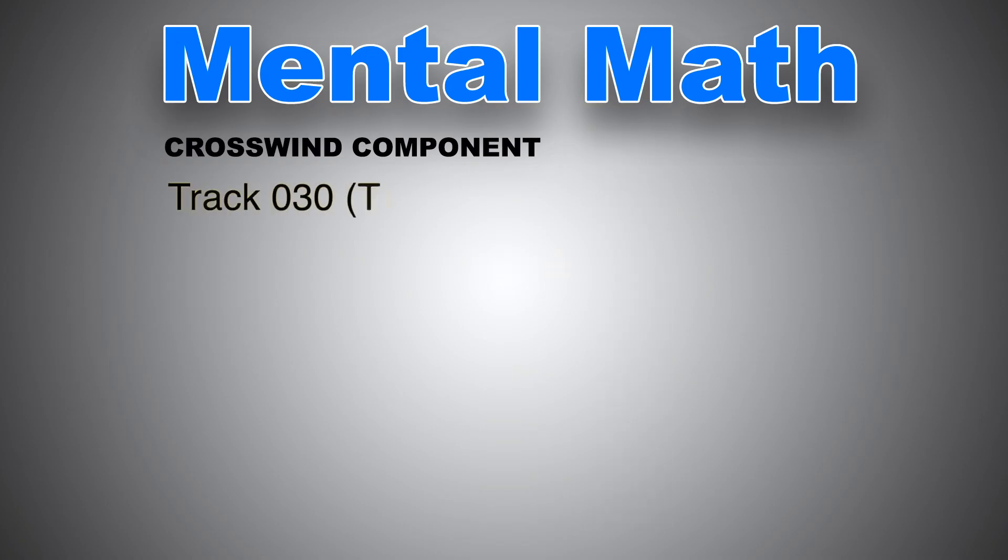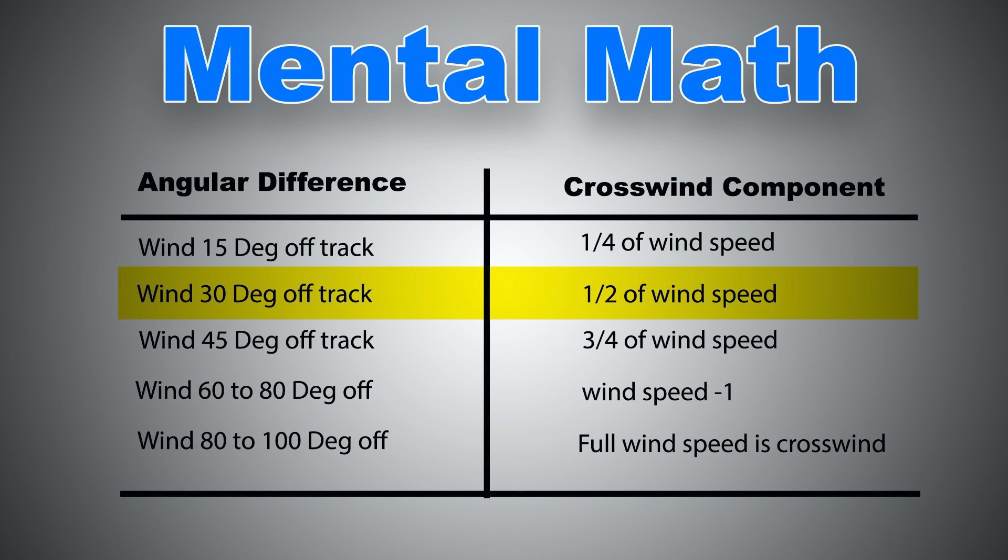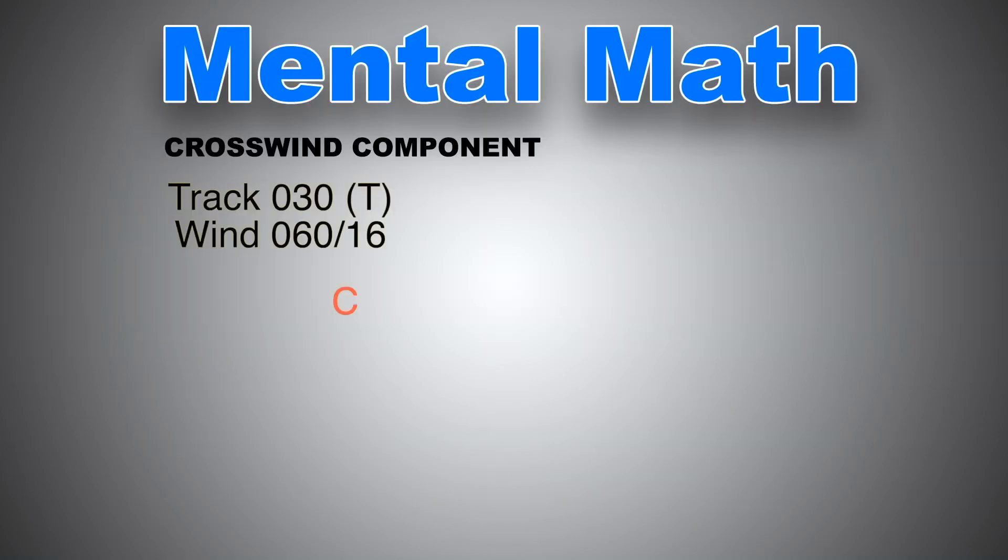One more example. Your true track is 030 and the wind is 060 at 16. What is your crosswind component and wind correction angle? So again, the difference between track and wind direction is 30 degrees. According to the table, 30 degrees off means half the wind speed or half 16 is 8 knots.